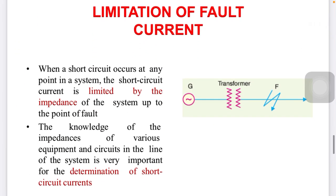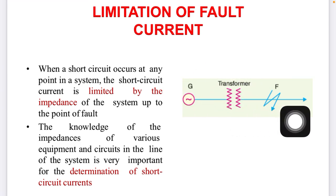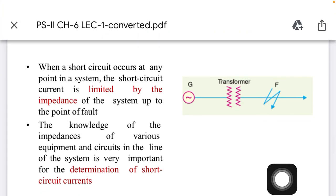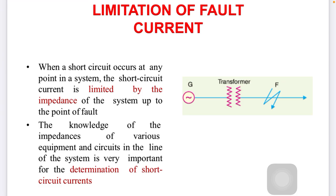When a short circuit occurs at any point of the system — for example, beyond the generator and transformer at fault point F — the short circuit current is limited by the impedance. The knowledge of impedance of various equipment and circuit lines in the system is very important for determining the short circuit current.